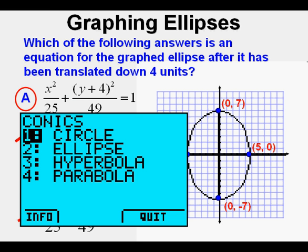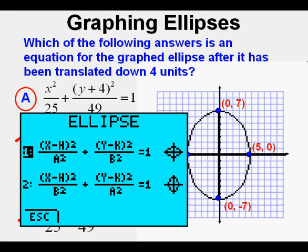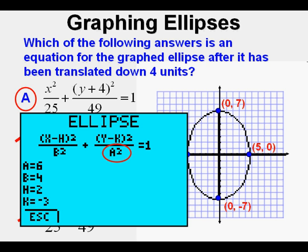We can try the conics application on the graphing calculator also. This is the conics menu. Choose ellipse. Go down to the vertical ellipse, option 2. Note that in this option the a² or the bigger number is underneath the y². Since a² is 49, we put in 7 for a. Since b² is 25, we put in 5 for b. Since the ellipse does not move to the left or the right, we set h at 0. Now comes the hard part.